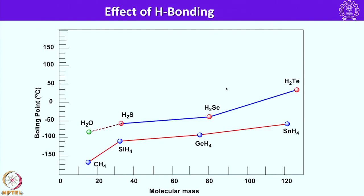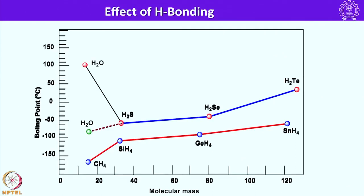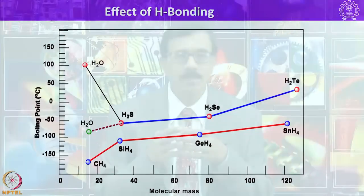For this I have chosen two sets of compounds here to verify their boiling point. I have chosen group 14 hydrides such as methane, silane, germane and stannane and in case of group 16 water, hydrogen sulfide, hydrogen selenide and hydrogen telluride. You can see in absence of any anomaly water is expected to show a boiling point of minus 100, but that is not the case.